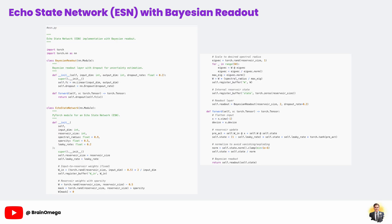It consists of a fully connected linear layer which transforms the reservoir's output into the final output space, such as action scores for our agent. But what really sets it apart is the dropout layer that follows. By enabling dropout during both training and inference, we turn our deterministic neural network into a Bayesian estimator.